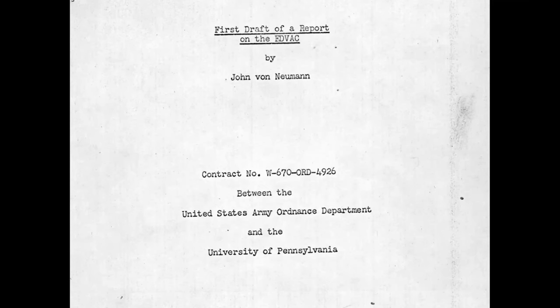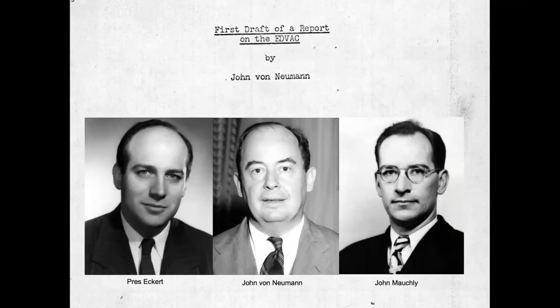The stored program machine the ENIAC group were envisaging was dubbed the Electronic Discrete Variable Computer, EDVAC. The question of how the stored program idea came to be under discussion at the Moore School is a tangled one. The great engineer Pres Eckert, who with John Mauchly led the ENIAC project, always claimed to have thought of the idea himself, whereas others maintained that John von Neumann contributed it. Von Neumann had been brought into the Moore School as a consultant around mid-1944, after which there were groundbreaking discussions between von Neumann, Eckert, Mauchly, and others on high-speed memory, logical control, and coding.